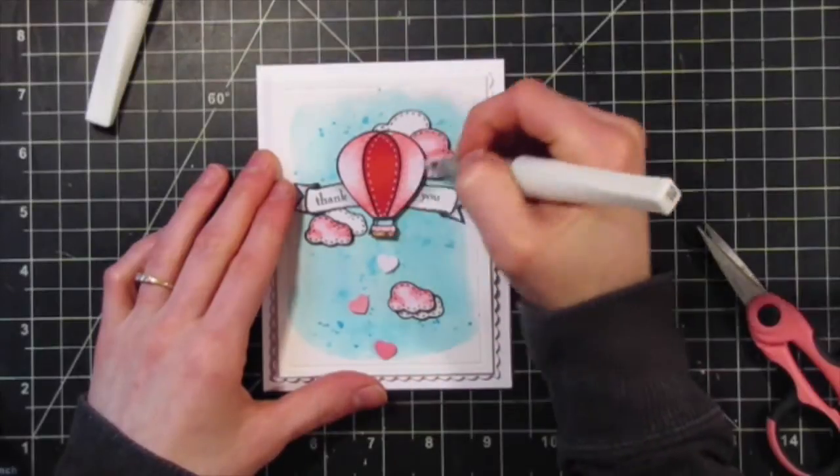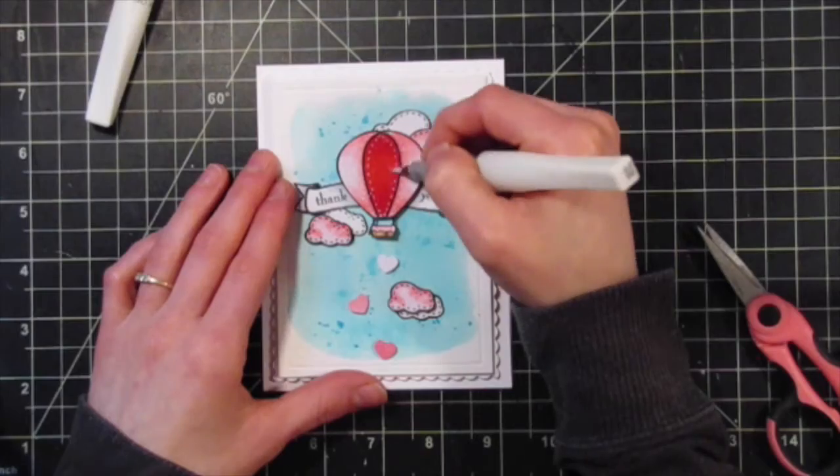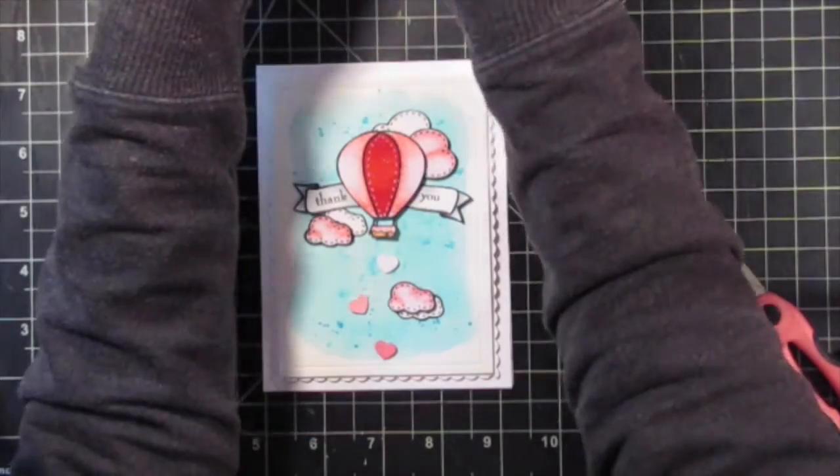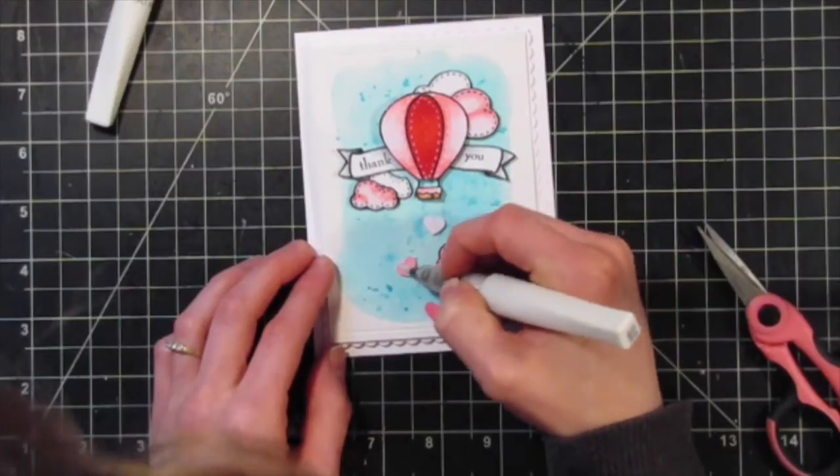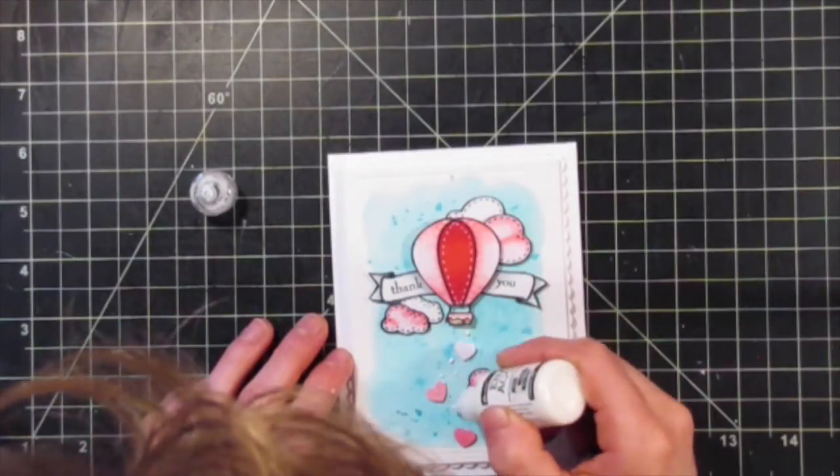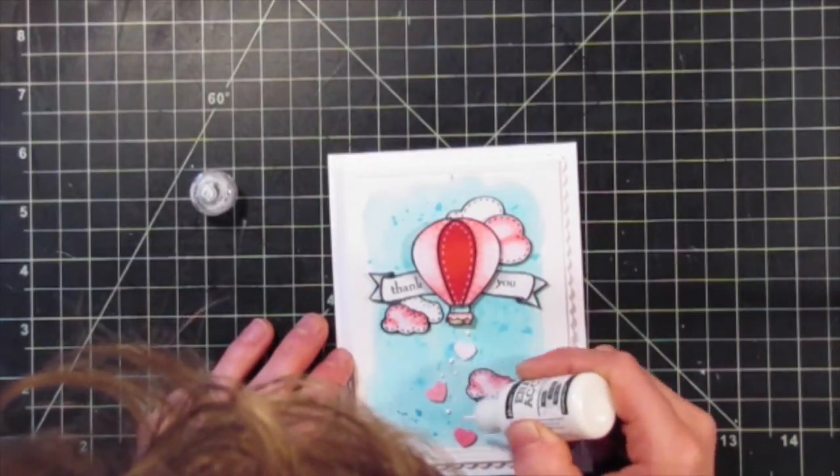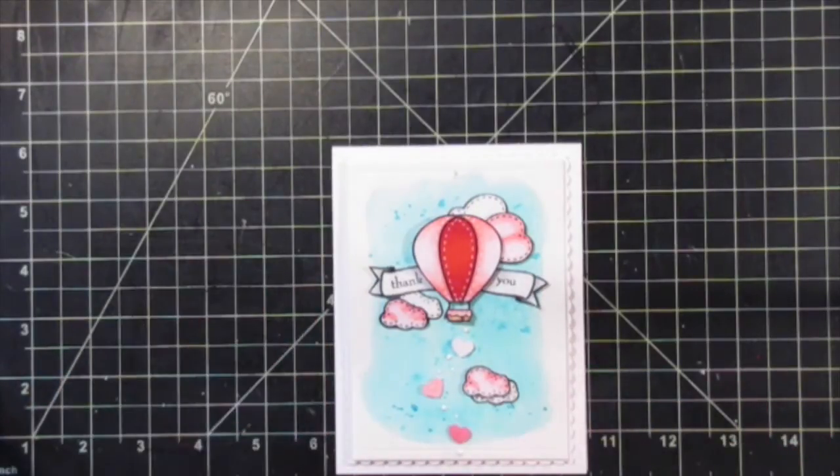Now I'm taking some Wink of Stella clear glitter and applying some glitter to the balloon and also to the little hearts. That just adds a nice bit of sparkle and shine to the card. I've also attached my panel to the card base, and finally I'm adding some white enamel accents to the card as well, just to help finish off the trail that's following the balloon.